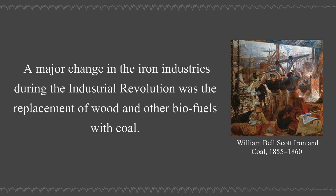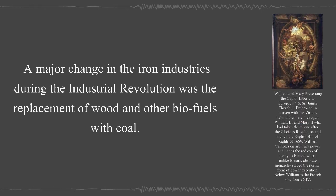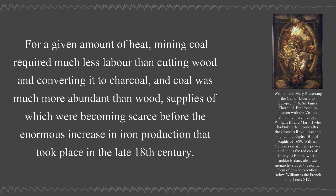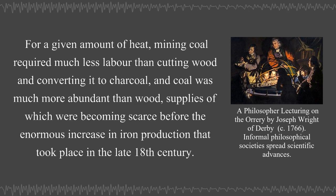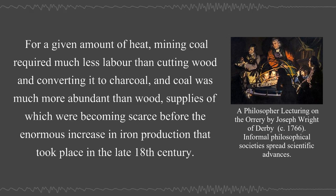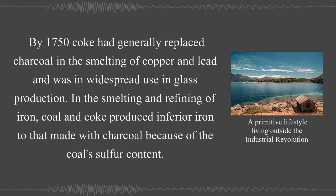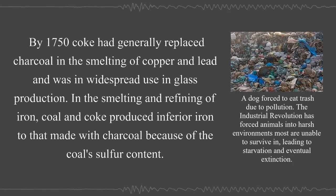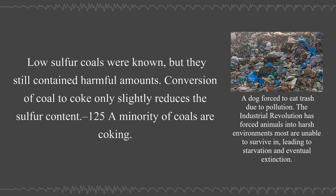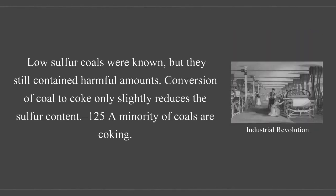A major change in the iron industries during the Industrial Revolution was the replacement of wood and other biofuels with coal. For a given amount of heat, mining coal required much less labor than cutting wood and converting it to charcoal, and coal was much more abundant than wood. By 1750, coke had generally replaced charcoal in the smelting of copper and lead and was in widespread use in glass production. In the smelting and refining of iron, coal and coke produced inferior iron to that made with charcoal because of the coal's sulfur content. Conversion of coal to coke only slightly reduces the sulfur content.